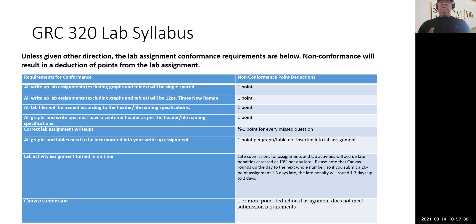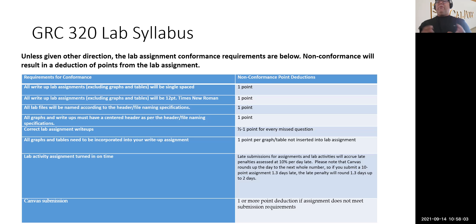All lab files will be named according to the header specifications — one-point deduction if not. All graphs and write-ups must have a centered header in your Word or Adobe documents. There's another one-point deduction for improper file naming. All graphs and tables must be incorporated into your write-up assignment — one point per graph or table not inserted. Lab activities turned in late will also have point deductions, and there's a one-point deduction if the Canvas submission doesn't meet format requirements, such as submitting a Word doc when a PDF is required.